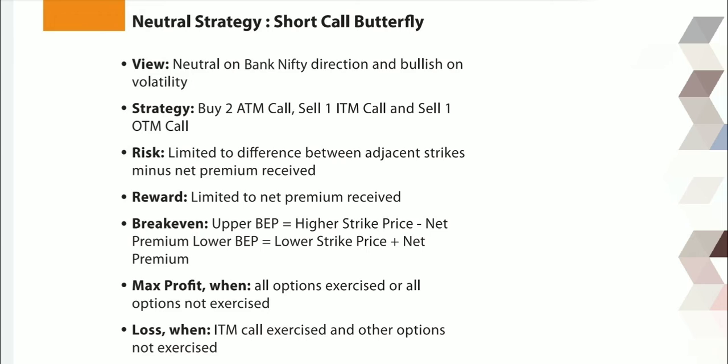Upper BEP equals higher strike price minus net premium. Lower BEP equals lower strike price plus net premium. Max profit occurs when all options are exercised or all options are not exercised. Loss occurs when the ITM call is exercised and the other options are not exercised.